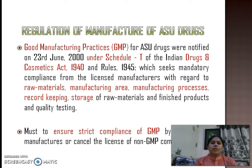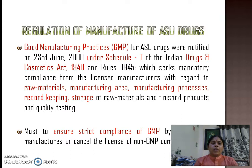Further, regulation of manufacturing of ASU drugs is through the Good Manufacturing Practices, i.e. GMP, for ASU drugs under Schedule T of the Indian Drugs and Cosmetic Act, 1940 and Rules, 1945. According to Schedule T, it is mandatory compliance from the licensed manufacturer with regard to raw materials, manufacturing area, manufacturing process, record keeping, storage of raw materials and finished products, and quality testing. Strict compliance of GMP by ASU drugs manufacturers is required, or it will lead to cancellation of the license if non-GMP compliance is found.